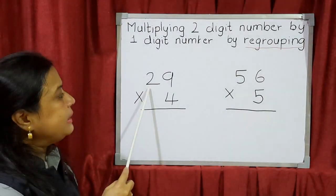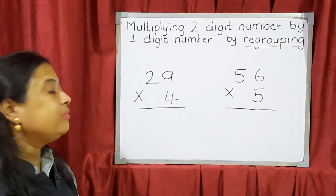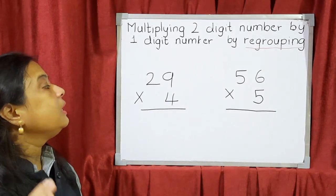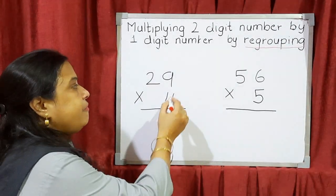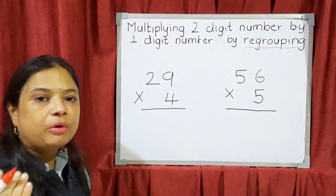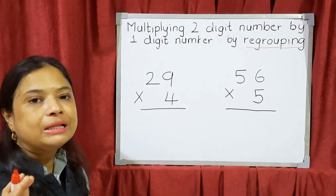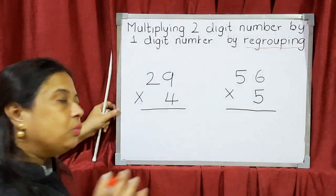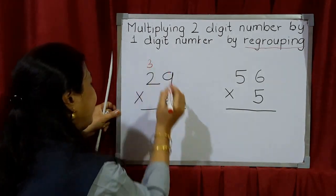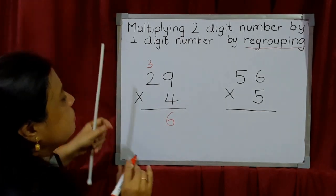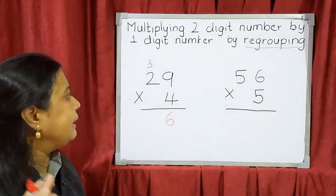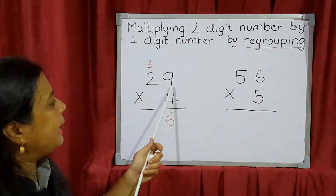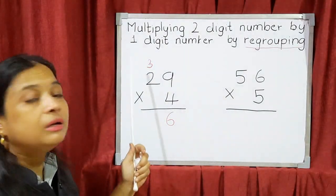Now let's look at 29 multiplied by 4. The common number is 4, so we say the table of 4. You can say either 4 nines or 9 fours — whichever table you know well. So 4 nines are 36. I can't fit 36 in one column, so I regroup: 3 goes in the tens column and 6 goes in the ones column. That is the first step — when two digits come, you regroup and write them down.